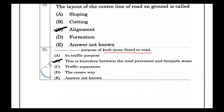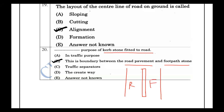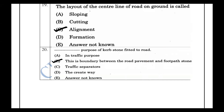The purpose of a kerb or curb fitted to a road is to serve as the boundary between the road pavement and the footpath. The curb separates the road carriageway from the footpath, which is an important concept for the road inspector exam.